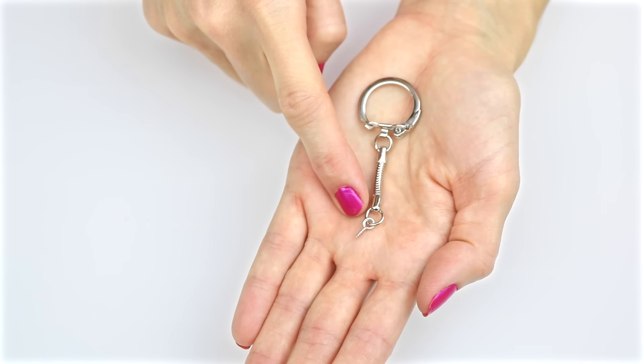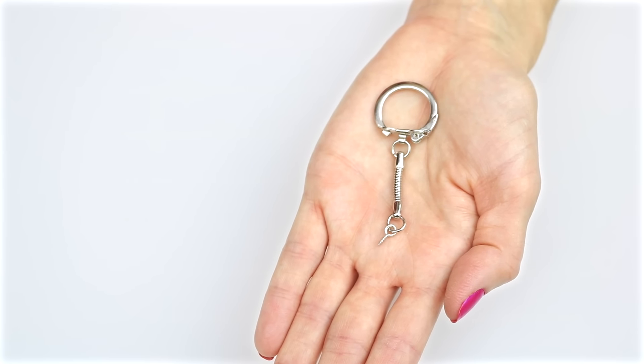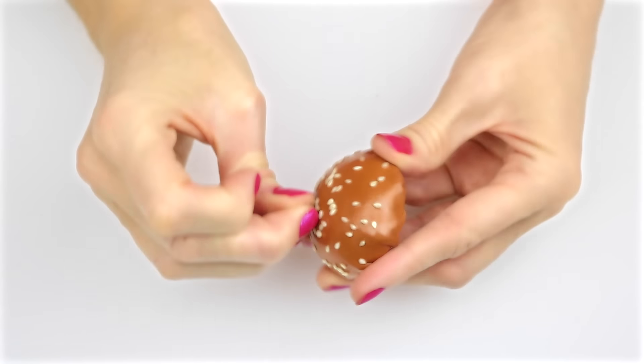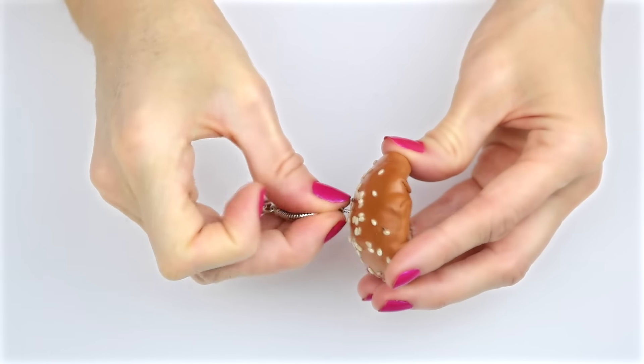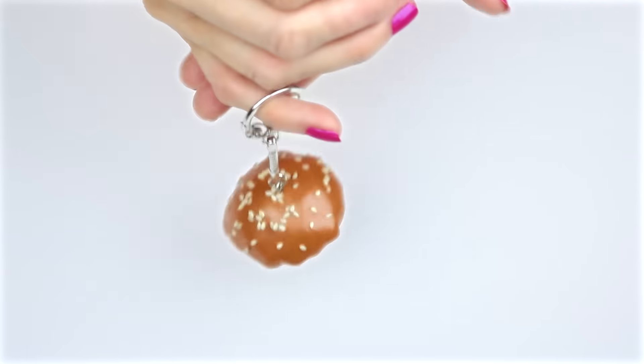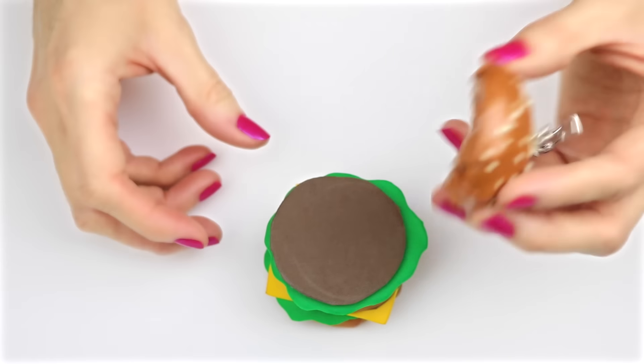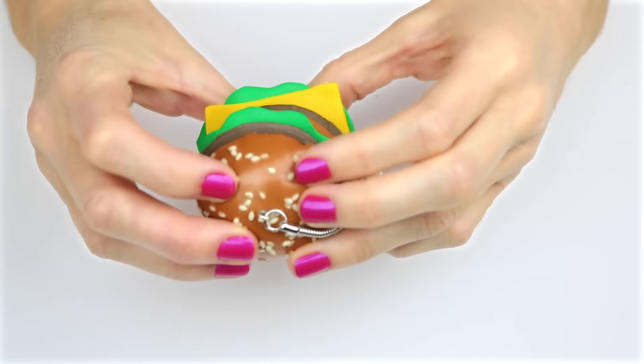Before gluing down the top of the bun, put together an eye hook, jump ring, and keychain. Place the keychain in the top center of the hamburger bun. Now, hot glue the top bun down, and that is how you make a mini Big Mac keychain.